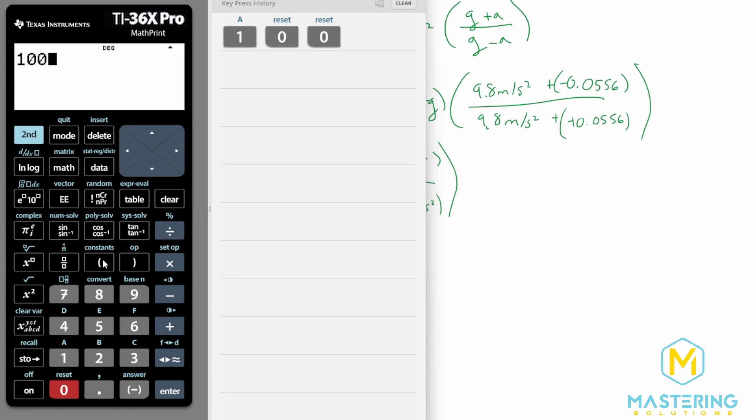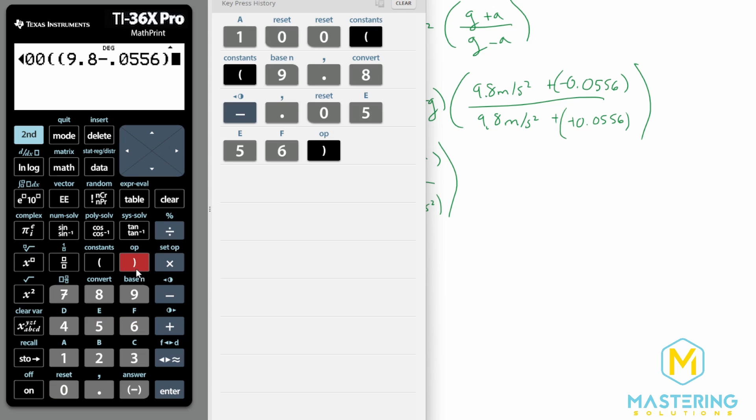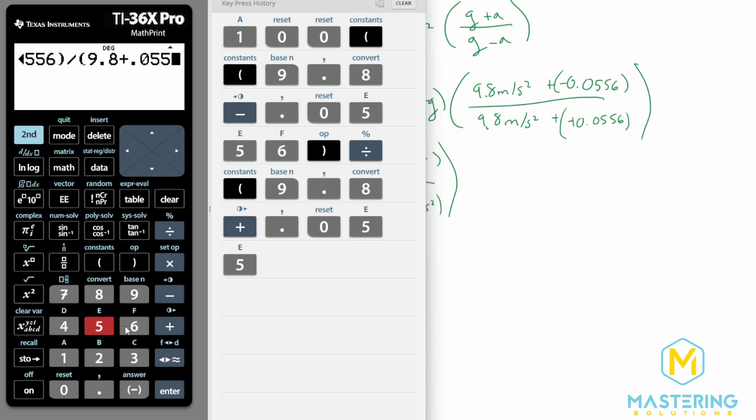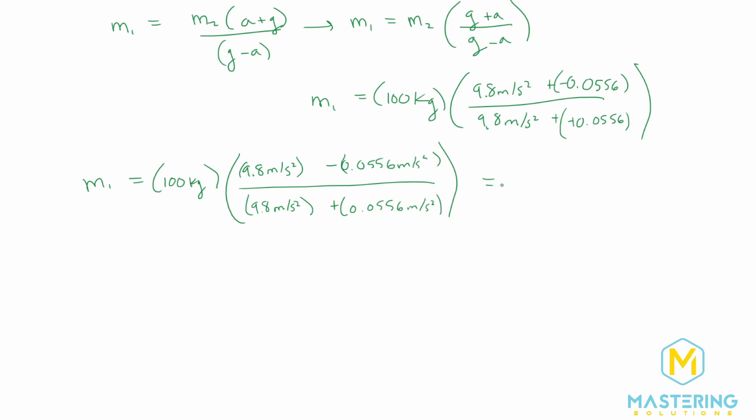Okay, so we have 100. And then on the top, we have 9.8 meters per second squared. And then we're minusing 0.0556. And then on the bottom, we have same thing 9.8 only now we're adding 0.0556. And that gives us 98.8. So for significant figures, let's round that to 99. So the answer is 99 kilograms for the mass of the smaller block.